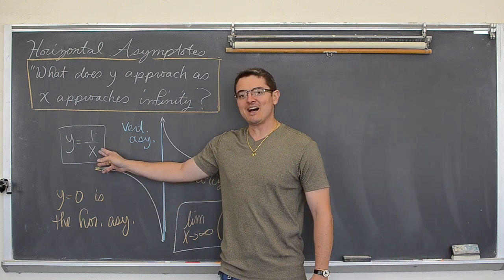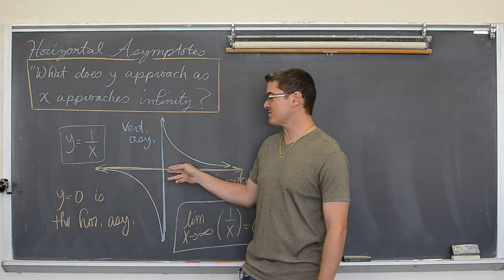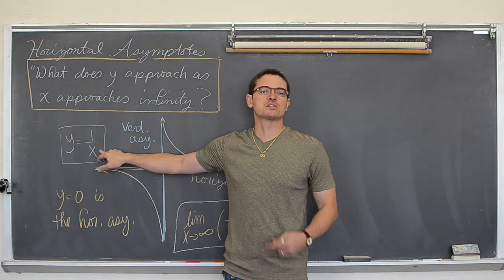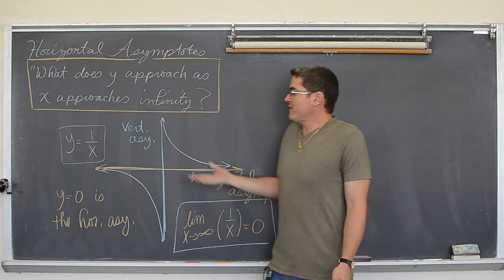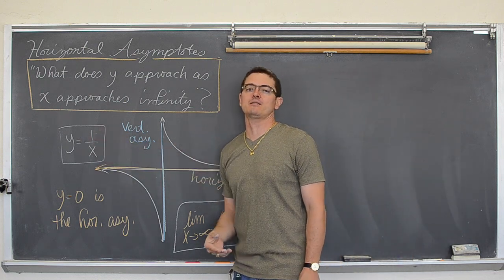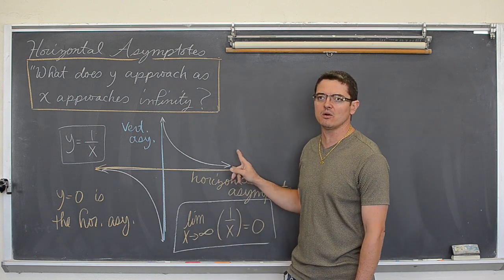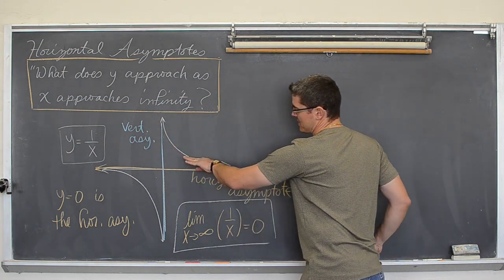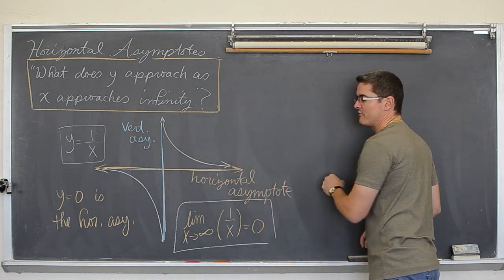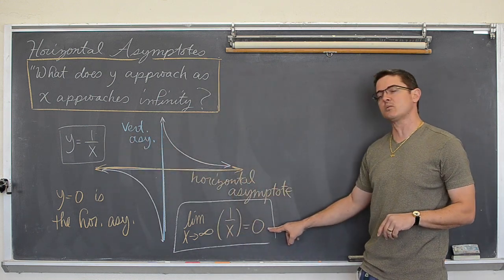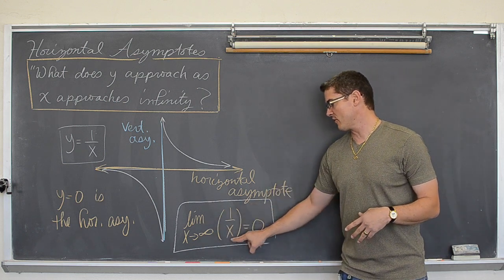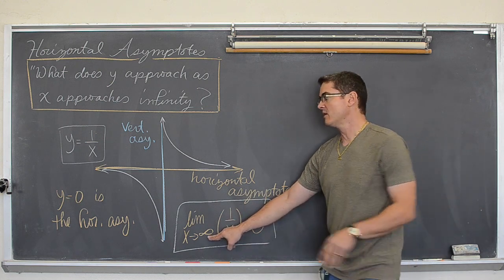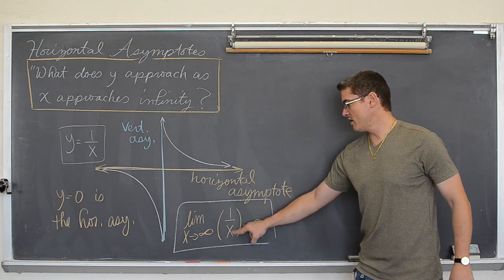If x equals one half, one divided by one half is two — but that is really close to the origin and I said I didn't care about those points. If x equals ten, one divided by ten is 0.1. If x equals a thousand, it is one divided by a thousand, which is 0.001. So as x values get bigger and bigger, this function takes on values very close to — but not exactly equal to — zero. So the limit as x approaches infinity, or negative infinity, of one over x is equal to zero.